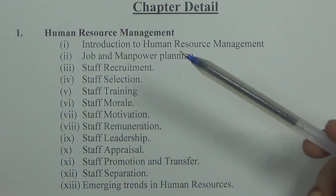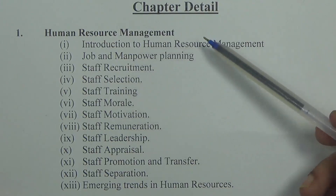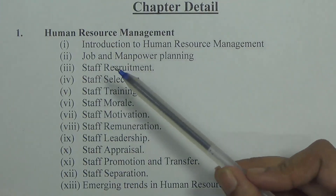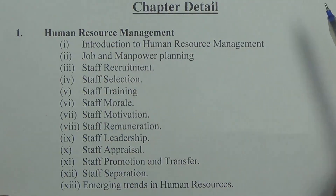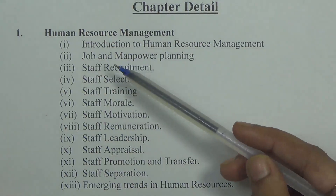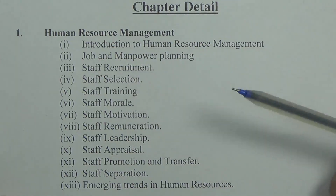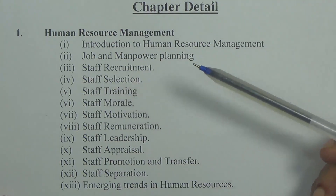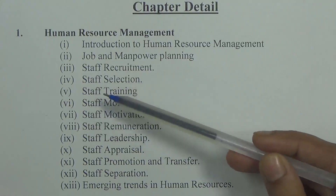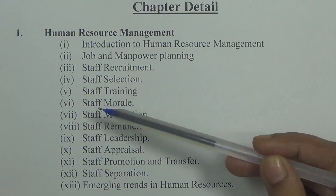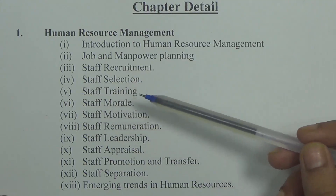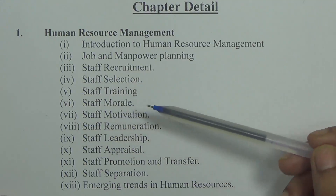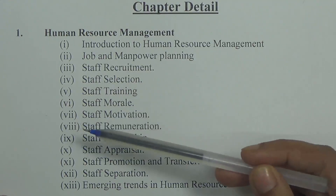The topics in Chapter 1 are: first, introduction to human resource management; second, job and manpower planning; third, staff recruitment; fourth, staff selection; fifth, staff training; sixth, staff morale; and seventh, staff motivation.